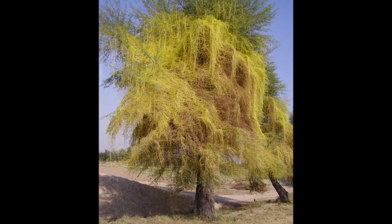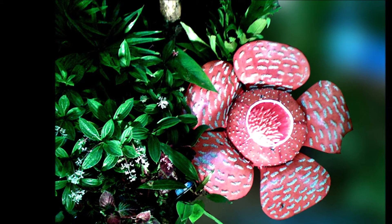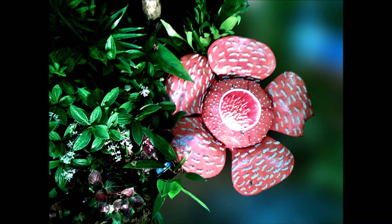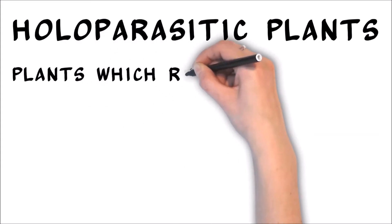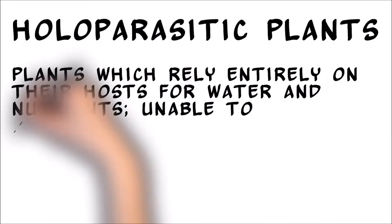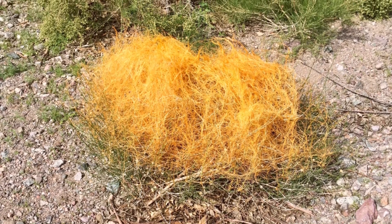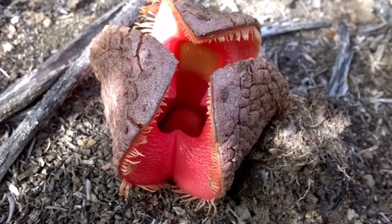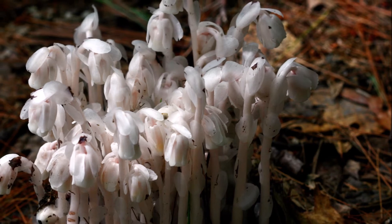Other parasitic plants are unable to survive without a host, completely reliant on their host plant for water, nutrients, and fixed carbon. These are called holoparasitic plants, and may not be capable of photosynthesis at all. Holoparasites frequently lack chlorophyll and may be unusual colors like red, orange, yellow, or even white.